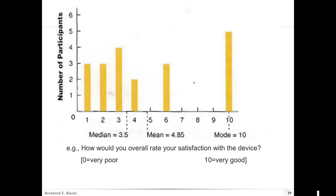Not showing all the raw data can also give a wrong impression. For example, if you take the median of a data set it would be 3.5, the mean would be somewhere close to 5, and the mode would be 10. Depending on what you want to say, some people might cheat a little by using a different way of summarizing the data. Be very careful of that.